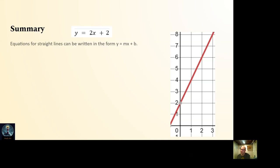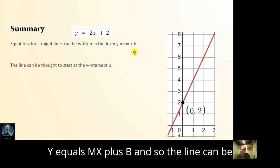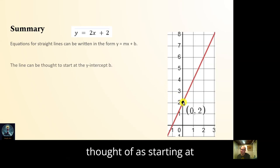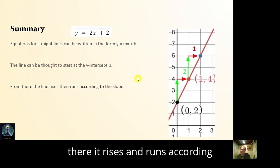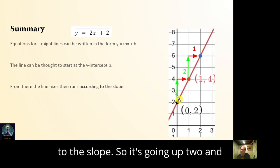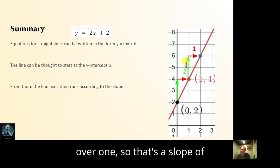The line can be thought of as starting at b — or two in this case — and from there it rises and runs according to the slope, going up two and over one.